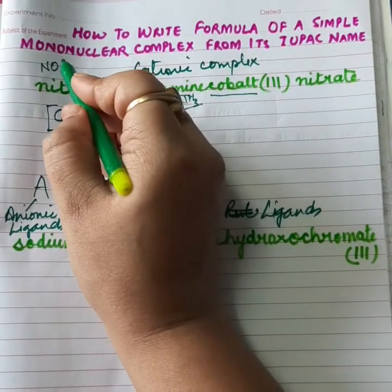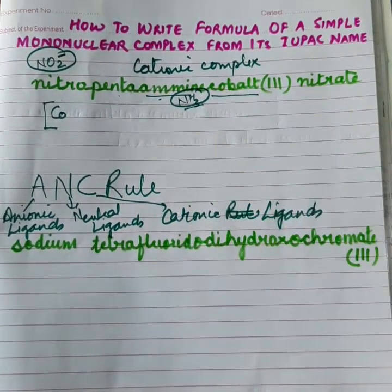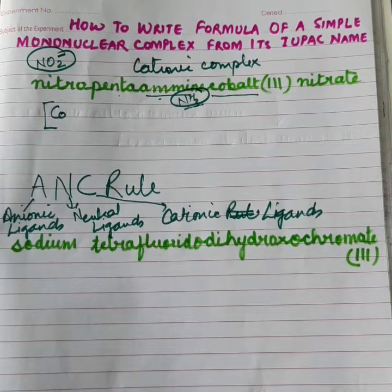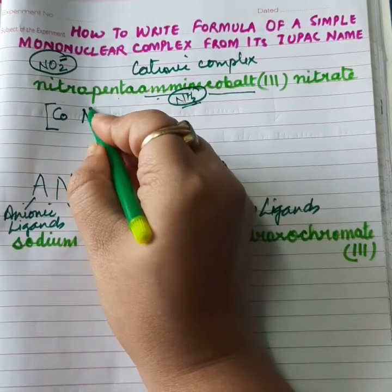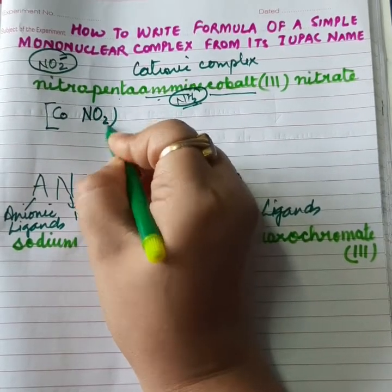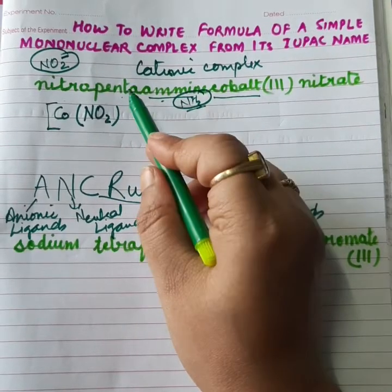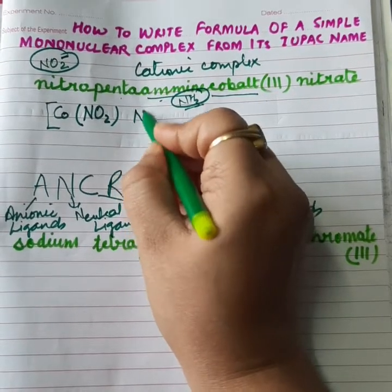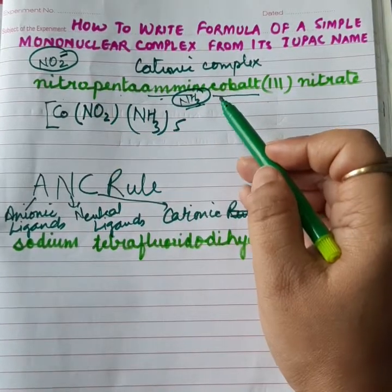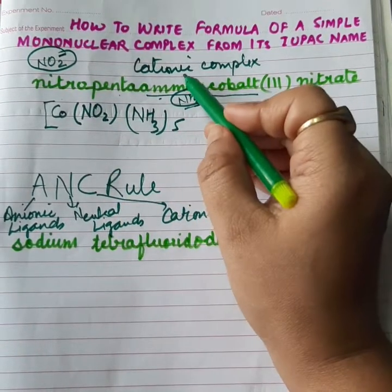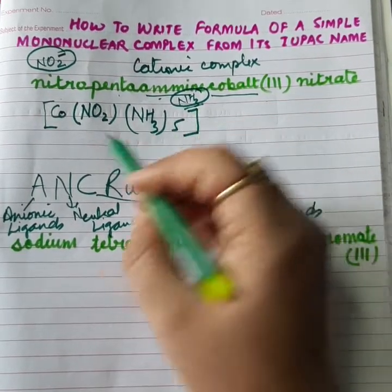Since we know nitro carries a negative charge, so it is anion. Amine is a neutral ligand. So, as per the rule, we will report anion first. Our anion is NO2, so after cobalt, I will report NO2. We will enclose in small bracket. Now, pentamine - amines are 5 in number, so NH3 whole 5. All the ligands got over. That means cationic part is over, so we enclose it in bracket.